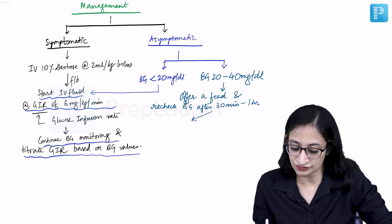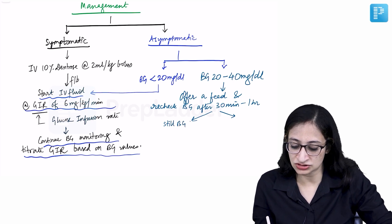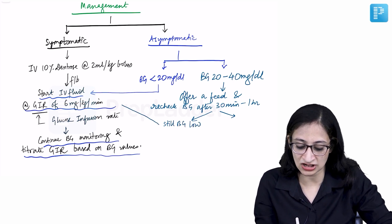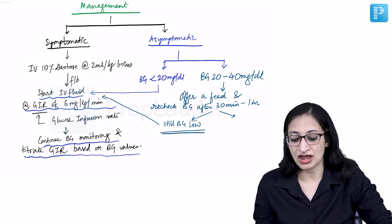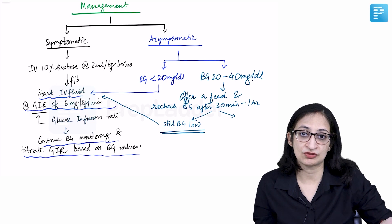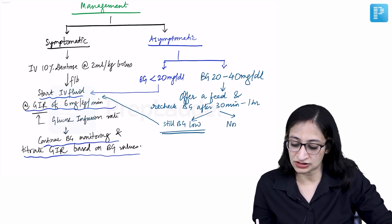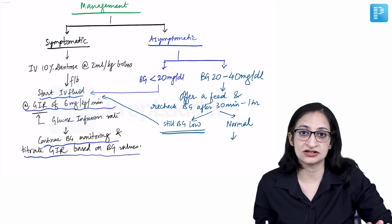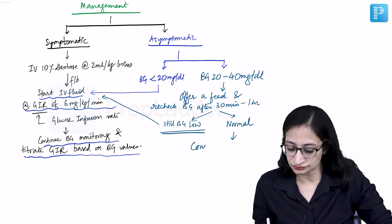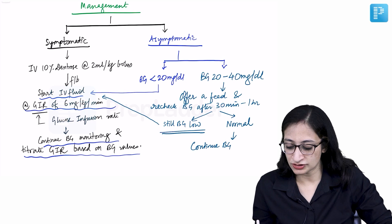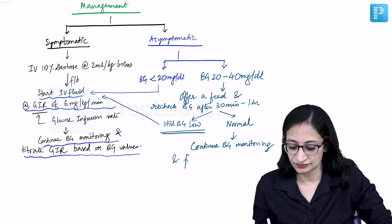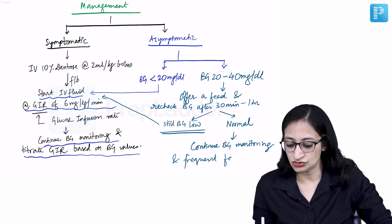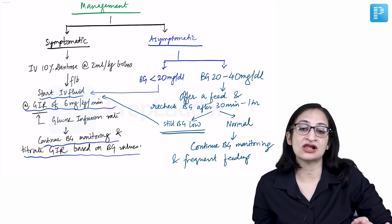After rechecking, if blood glucose is still low, start IV fluids and manage as you would a symptomatic baby. If blood glucose is now normal, continue frequent feeding and blood glucose monitoring. That is how you manage a baby with neonatal hypoglycemia.